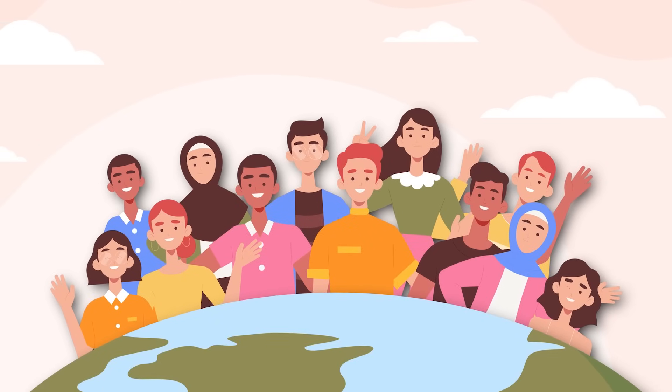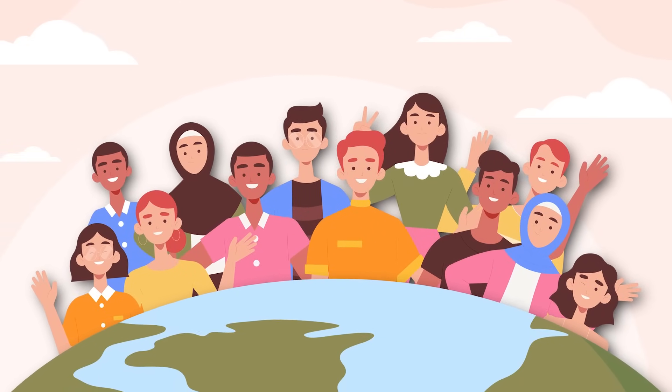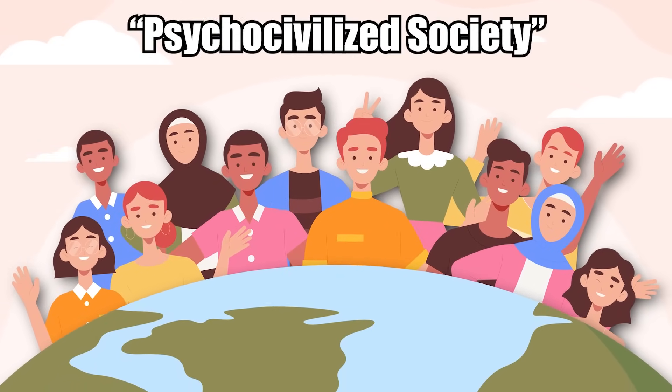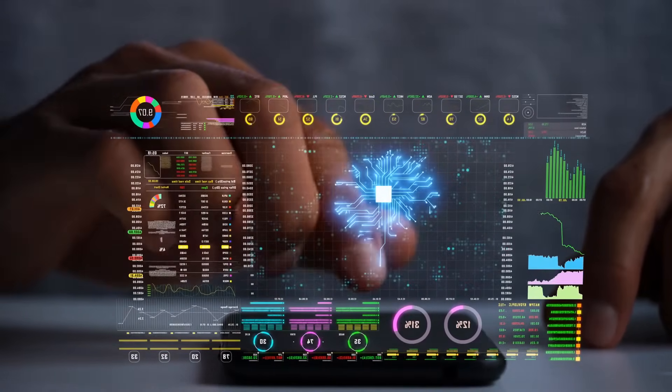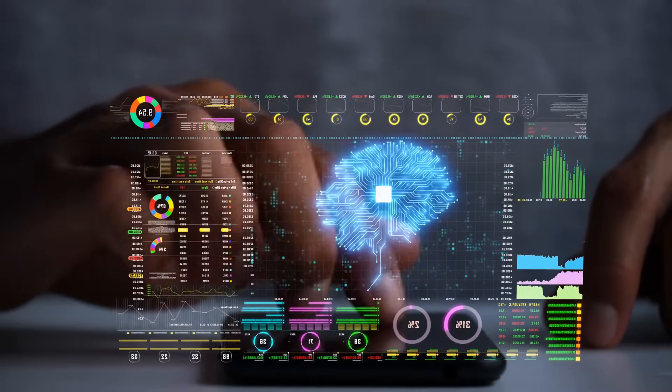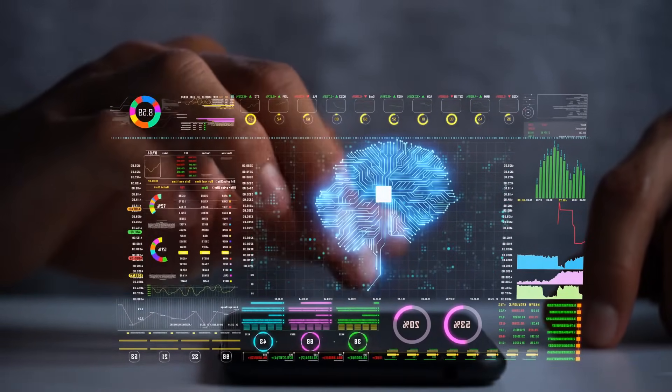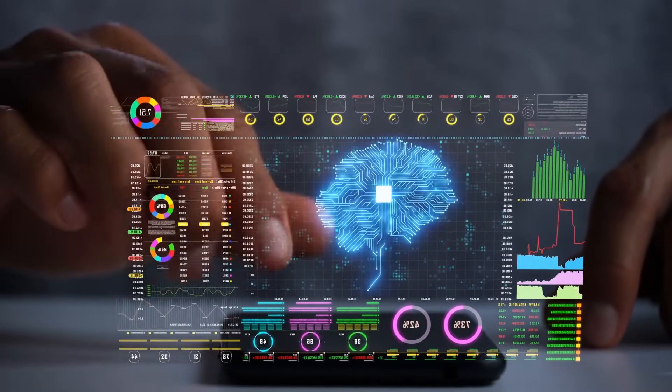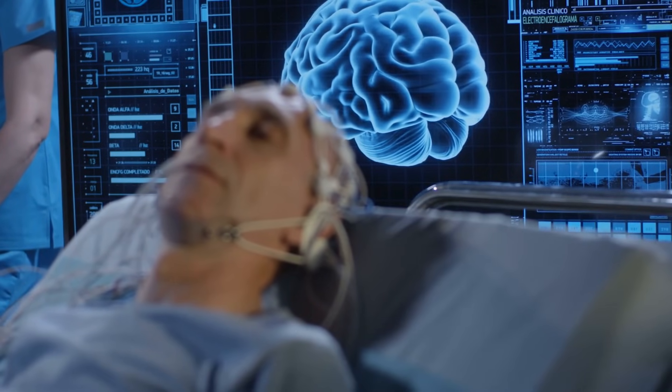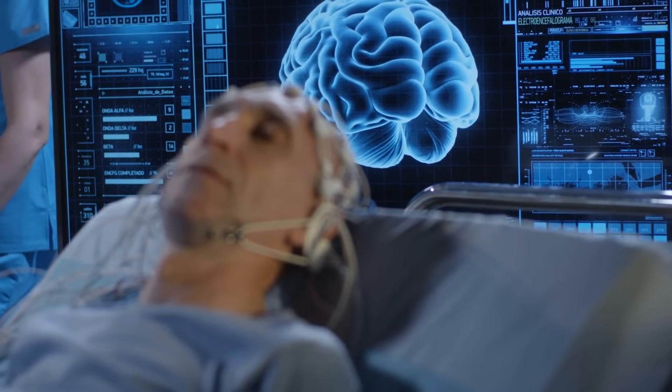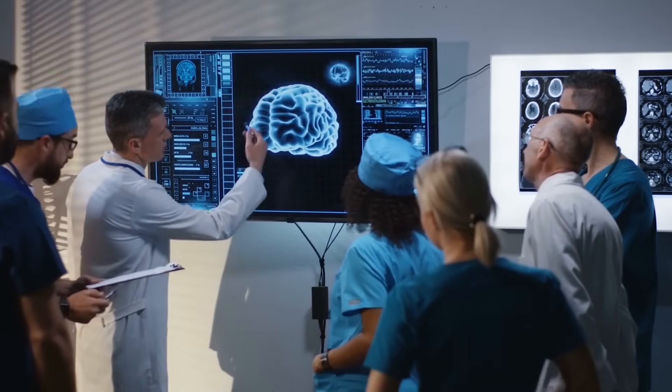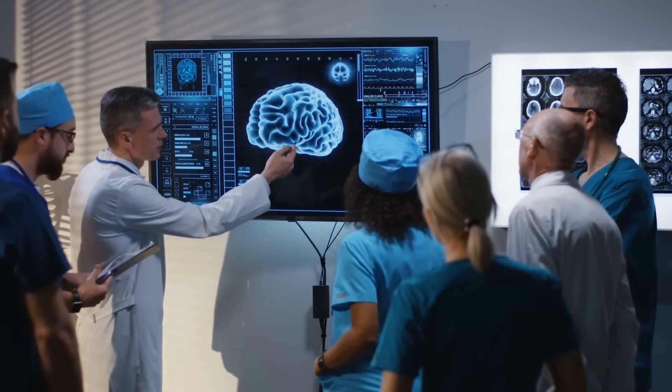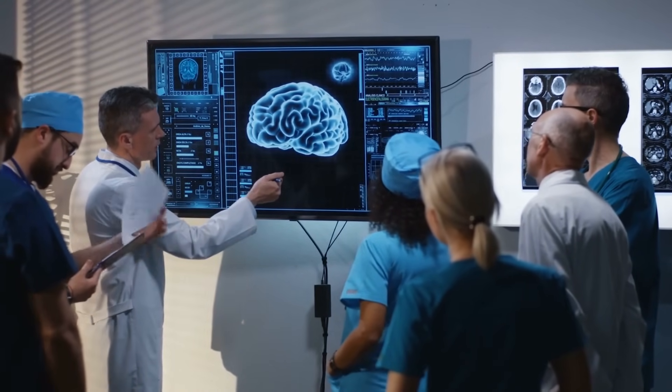Delgado believed that through his device, it would be possible to start what he called a psycho-civilized society. Delgado believed that humans could have implants put in their brains, all linked to a master switch that prevented any deviant or unwanted behavior. It sounds like an episode of Black Mirror, but this is real science that's been around for over 50 years. Scientists already know that human behavior can be manipulated by simple electrodes implanted inside the brain.